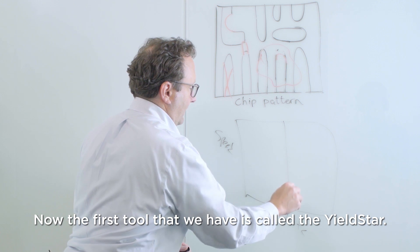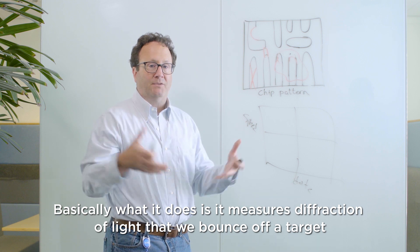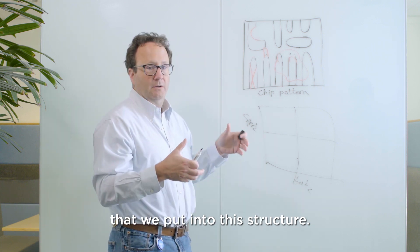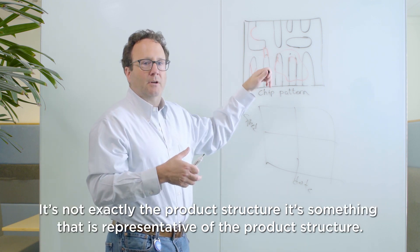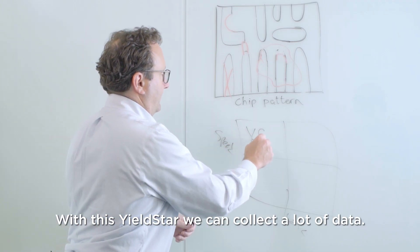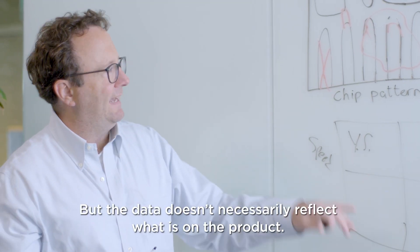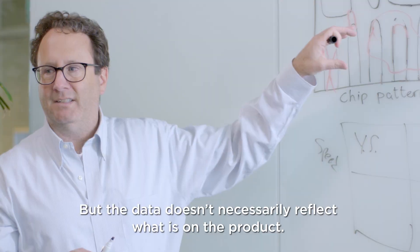Now the first tool that we have is called the yield star. Basically what it does is it measures the fraction of light that we bounce off a target that we've put into this structure. It's not exactly the product structure. It's something that's representative of the product structure. With this yield star we can collect a lot of data. Mountains and mountains of data very quickly. But the data doesn't necessarily reflect what is on the product.